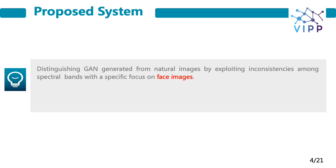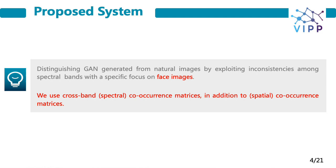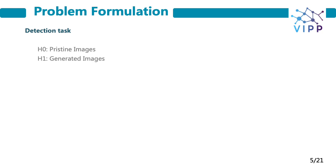We propose a method for distinguishing GAN-generated images by exploiting inconsistencies among spectral bands, with a specific focus on the generation of sensitive face images. We use cross-band spectral co-occurrence matrices in addition to spatial co-occurrence matrices as input to a CNN model, which is trained to distinguish between real and synthetic faces. Regarding the detection task, we consider H0 for pristine images and H1 for manipulated or generated images.